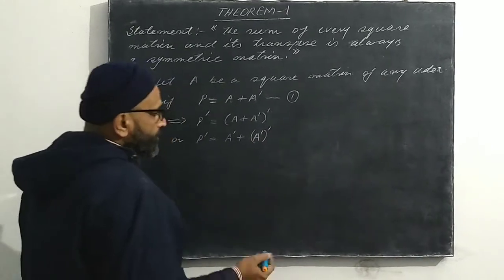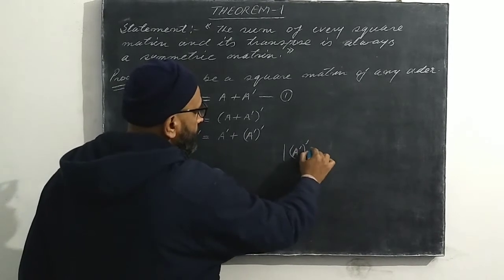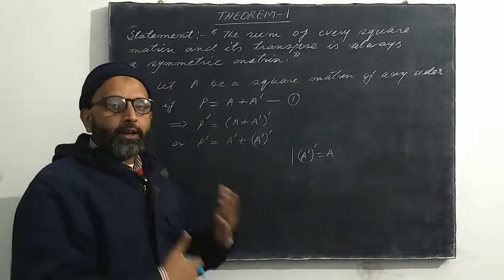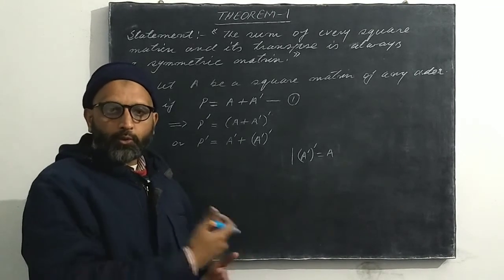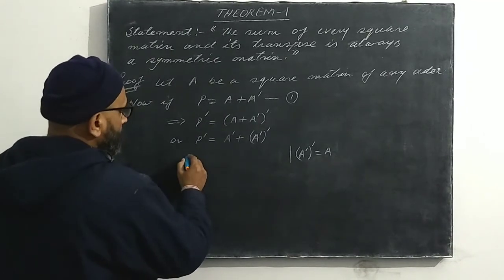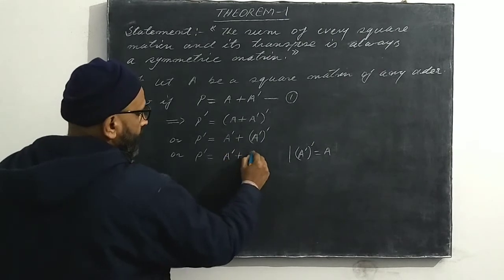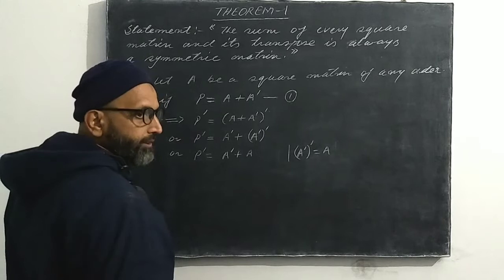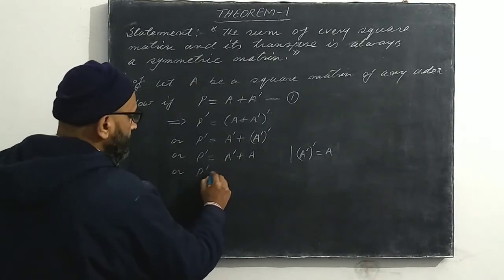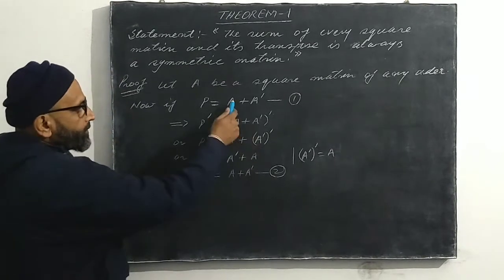We also know that the transpose of a transpose is the matrix itself — that is, A dash whole dash equals A again, because two transpositions return every element to its original position. So P dash equals A dash plus A. Since addition of matrices is always commutative, A dash plus A may also be written as A plus A dash, so P dash equals A plus A dash — call this equation two.